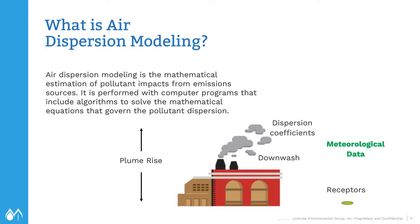Building dimensions are also important, because surrounding buildings can create downwash for nearby sources and pull the plume down. And the location of the receptors — these are the points where the model calculates the concentration of the air pollutant being modeled.